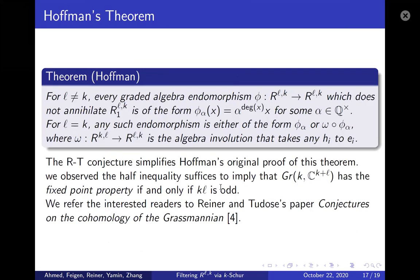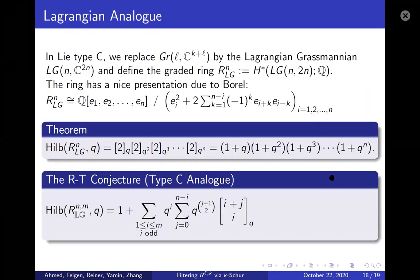Hoffman's theorem, which motivated the whole Reiner-Tudose conjecture, states that the endomorphisms of R_{k,l} have a nice form. If the Reiner-Tudose conjecture is known, it simplifies Hoffman's original proof of this theorem.